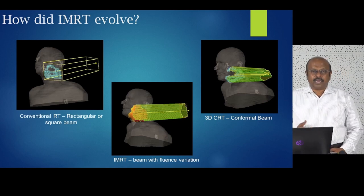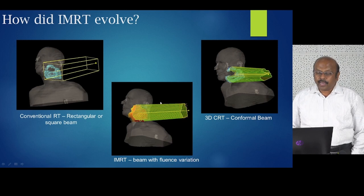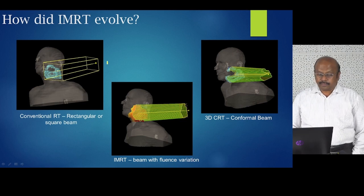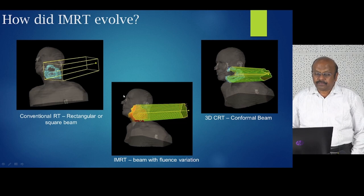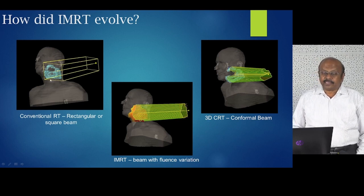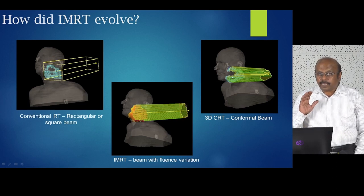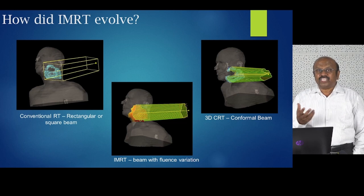How did IMRT evolve? Initially we were treating with square or rectangular fields, using very square fields even for an irregular tumor. Sometimes we used to shield at the middle or seal the corner. When multi-leaf collimators came, or when we could make conformal blocks, we were able to tailor the field to the shape of the tumor.